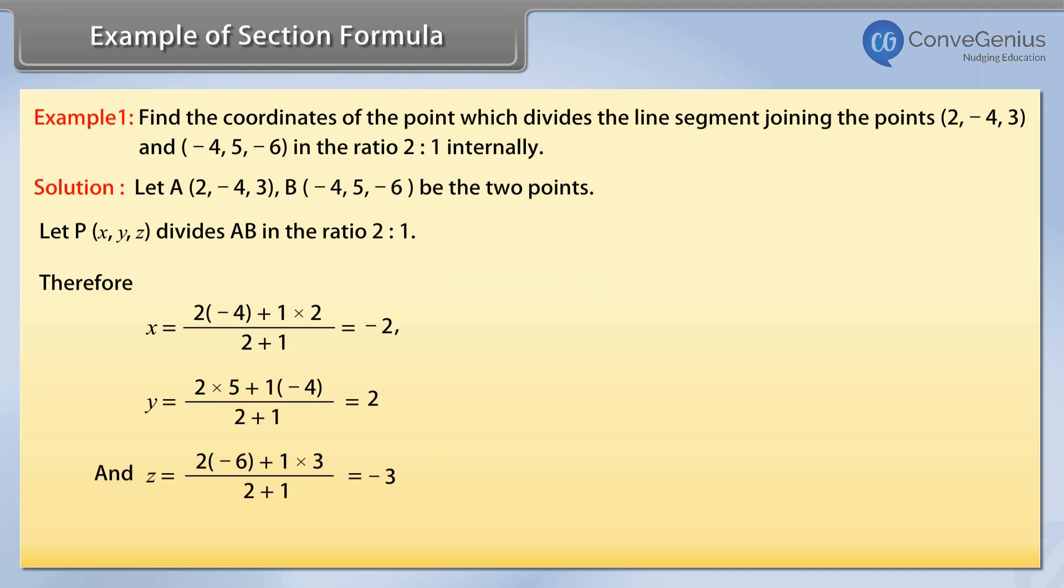And z equals 2 times (-6) plus 1 times 3, divided by 2 plus 1, equals -3.